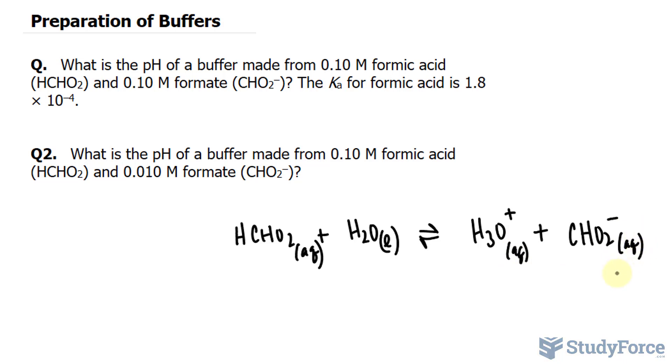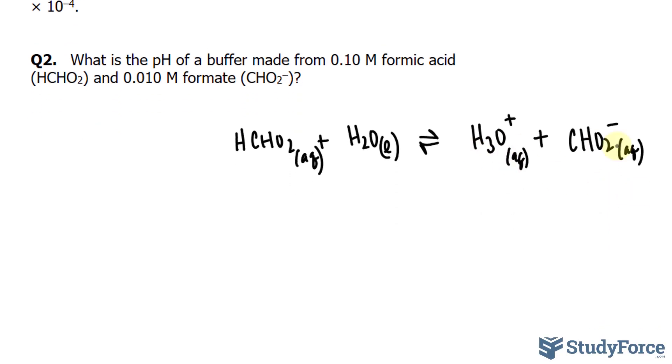From here, we need to write the acid dissociation constant expression. So we'll take the concentrations of the products, H3O+, and multiply it to this one. Make sure that this chemical equation is balanced. It is, but before you do this, you need to make sure that it's balanced, divided by only this one, because that's a liquid. So HCHO2, and that is equal to Ka, the dissociation constant that they gave us in the question.